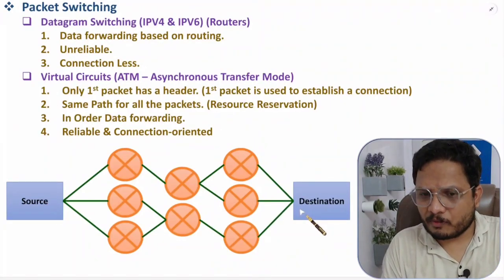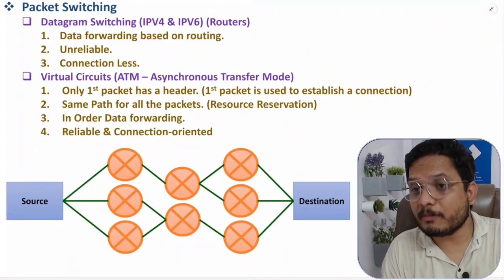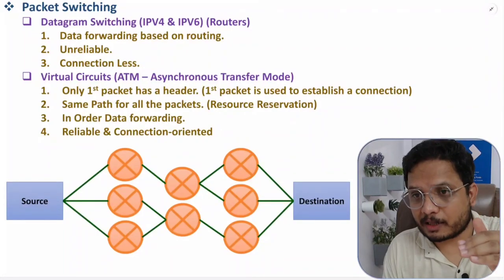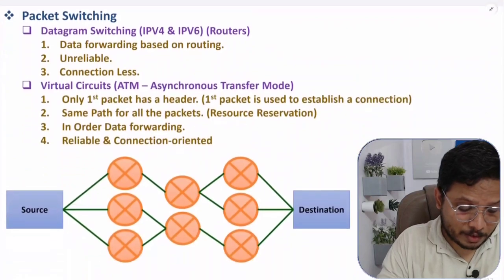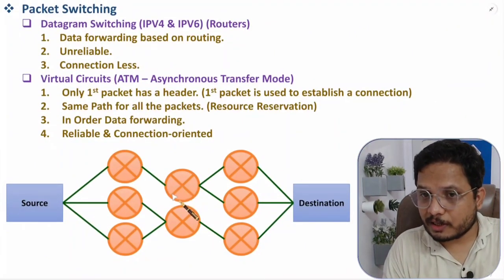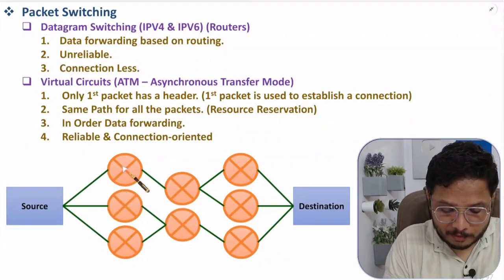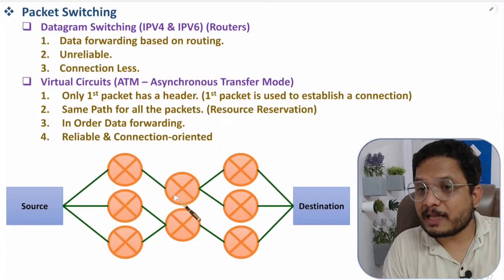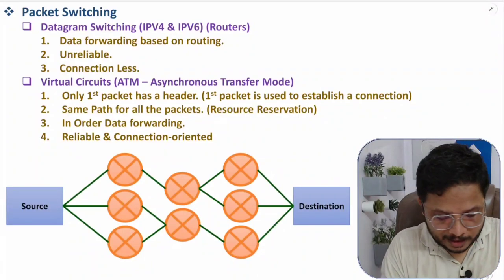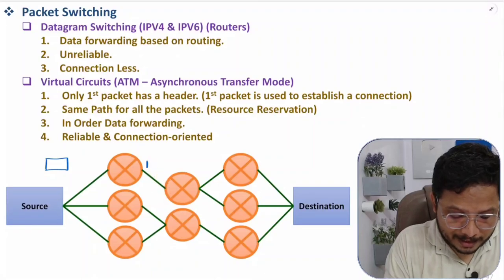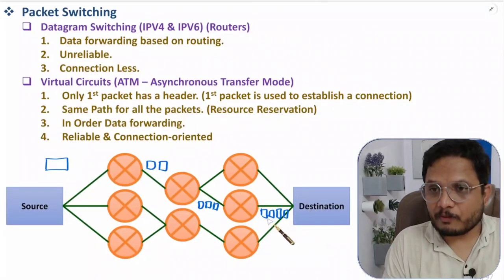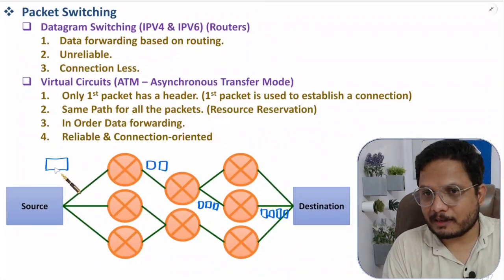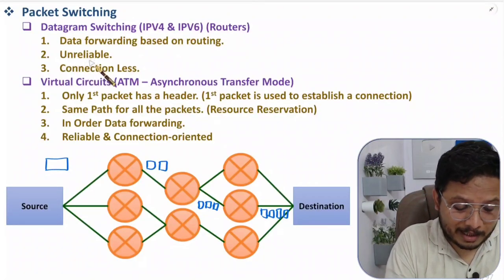In datagram switching, routers take decisions about the path based on algorithms — there is no fixed circuit. Data forwarding is unreliable because there is no acknowledgement or feedback. Source and destination have no confirmation of whether a frame was received; it may get corrupted. A message may be fragmented into two, three, or four pieces at different hops, and the destination combines them. This is connectionless switching.